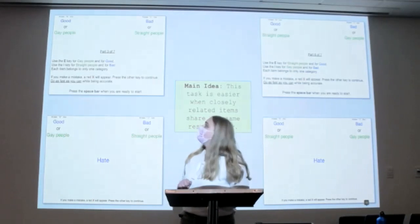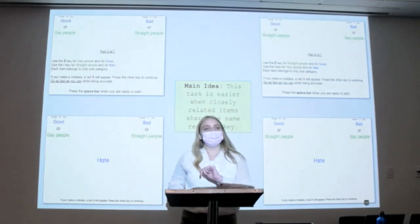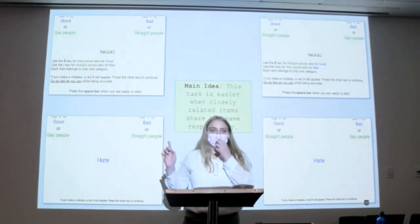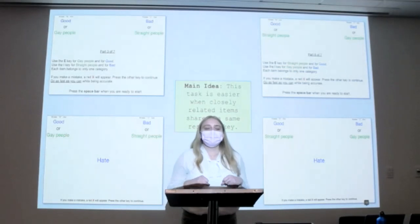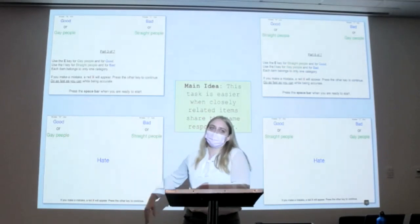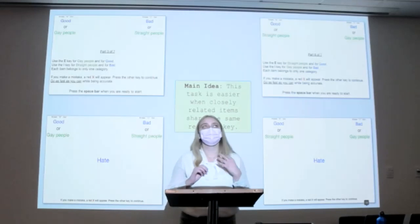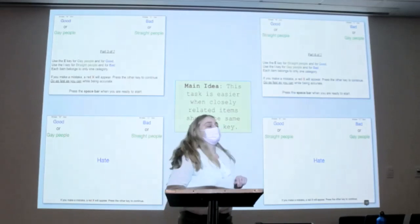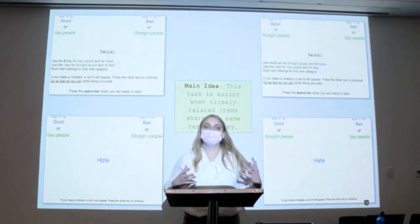What you can see on the left here is that good or gay people are associated with the E key, while bad or straight people are connected to the I key. Participants are given these instructions and then given words such as 'hate,' 'heterosexual,' or 'homosexual,' and they have to press the corresponding key. Then these things are switched, so good or straight people are connected to the I key and bad or gay people are connected to the E key.